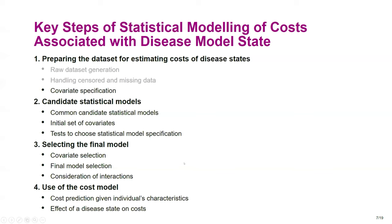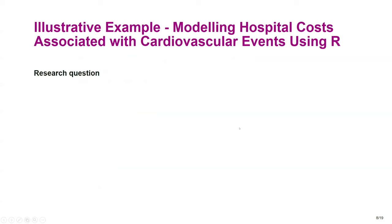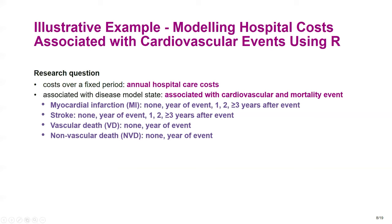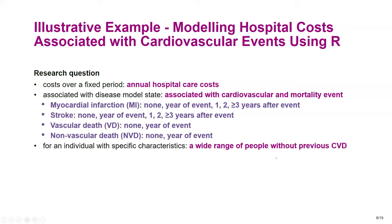I will go through an illustrated example by modeling hospital costs associated with cardiovascular events using R. The research question is to estimate the annual hospital care costs associated with cardiovascular and mortality events. For each descriptor, myocardial infarction covers no MI, same year of MI, and one, two, three years after MI; stroke is handled similarly, plus vascular death and non-vascular death. We consider people without previous cardiovascular events, including characteristics such as age, sex, cholesterol level, and BMI.